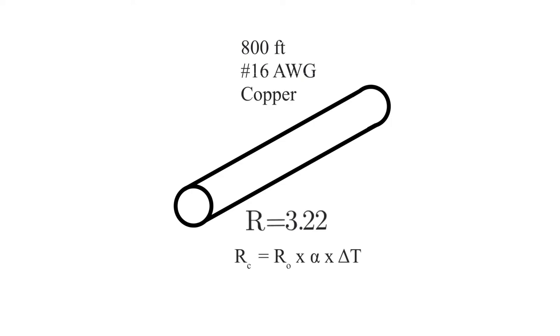So what we're going to use is this formula here. R sub C is equal to R sub O times alpha times delta T. Now we're going to look at what these are. This is your original resistance, which is the 3.22 ohms. This symbol here is our coefficient of temperature, and this means the change in temperature from the 20 degrees that we've calculated out so far.